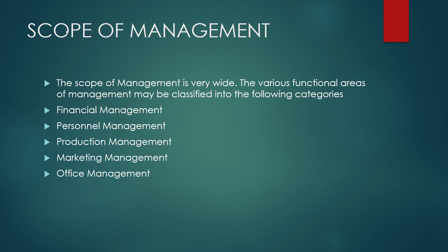Personal management, also called human resource management, involves planning, organizing, directing, and controlling the procurement, development, compensation, and maintenance of human resources in an enterprise. It consists of manpower planning, recruitment, selection, training and development, performance appraisal, compensation and promotion, employee services and benefits, personal records, and research.